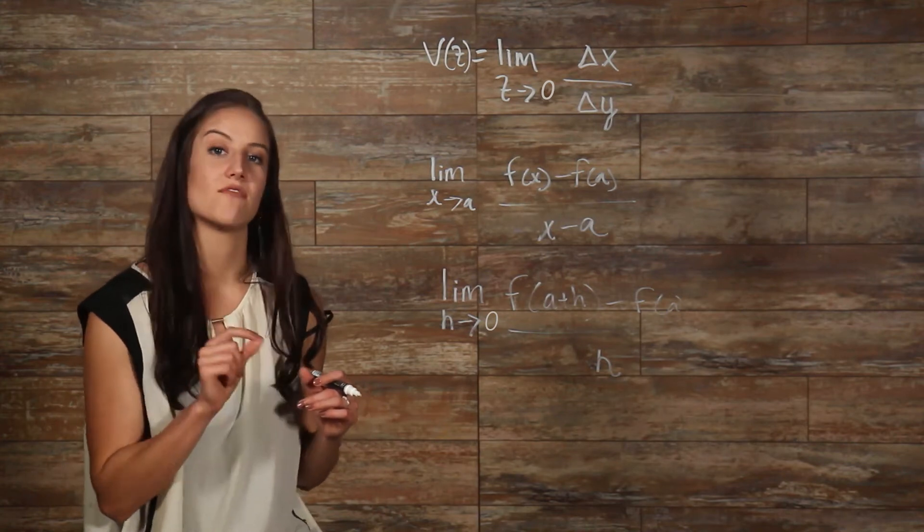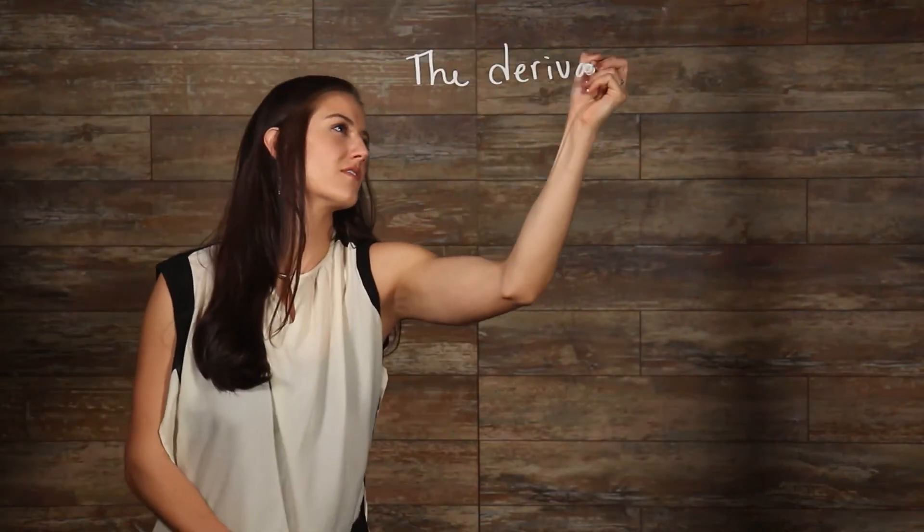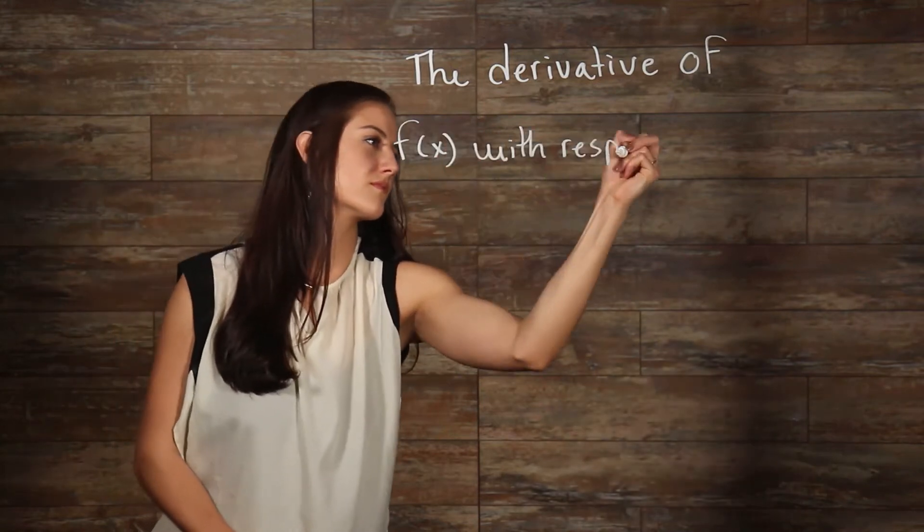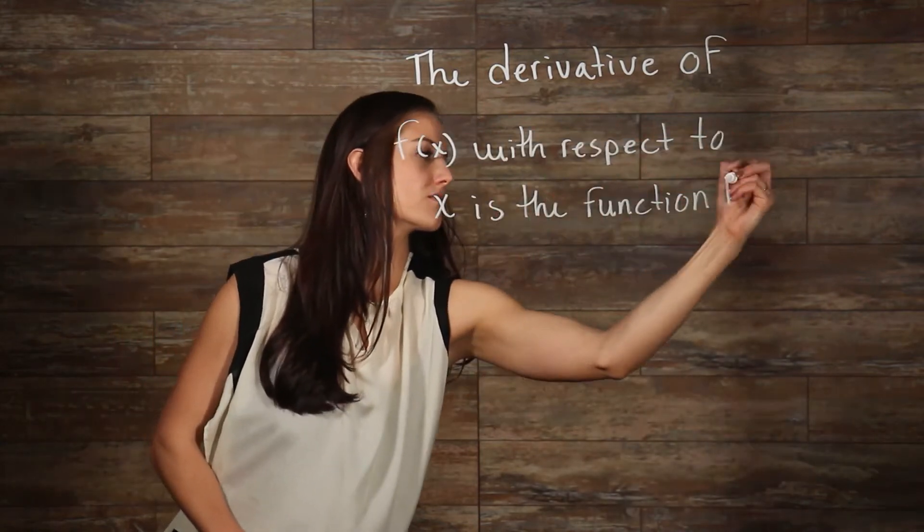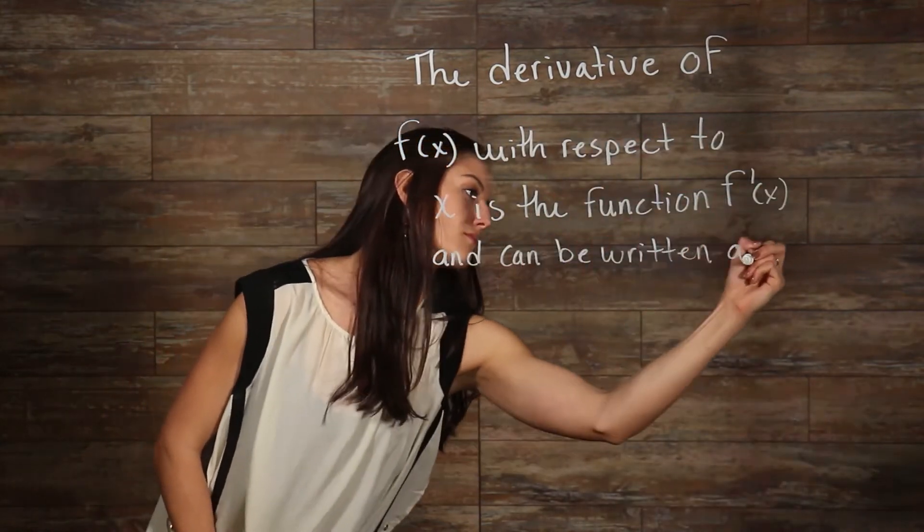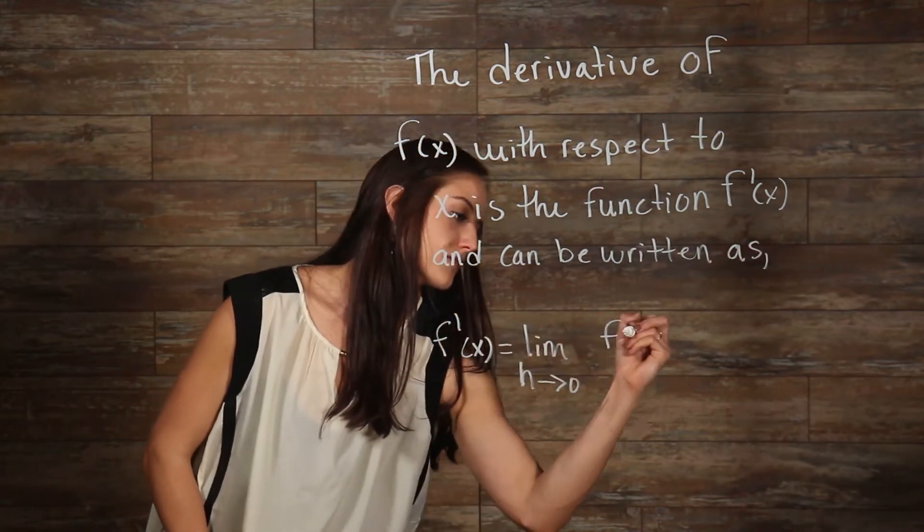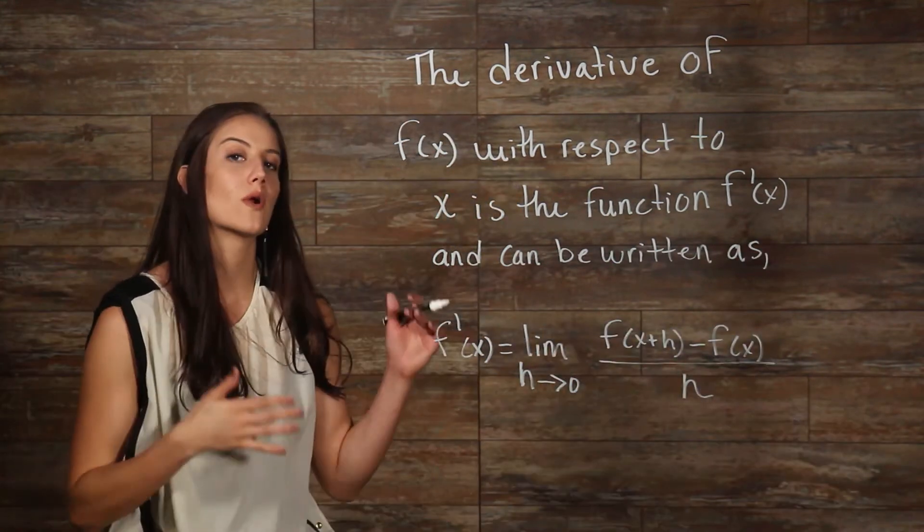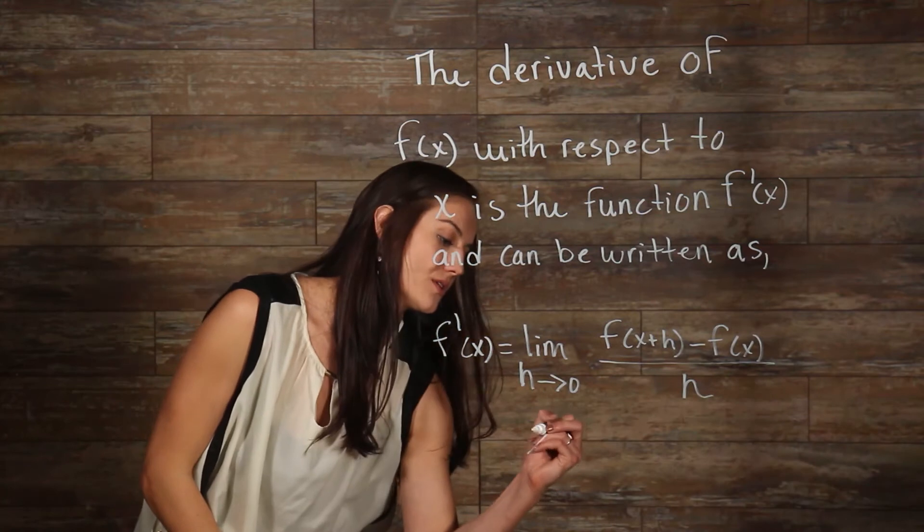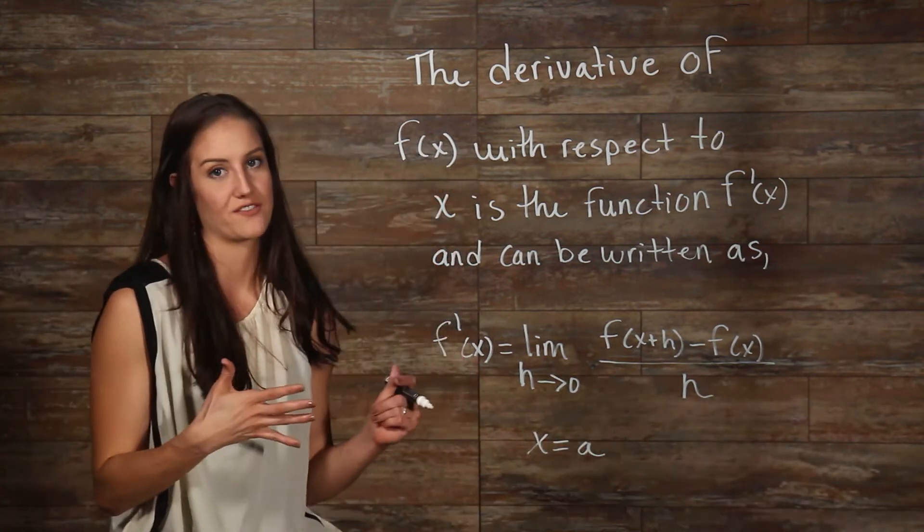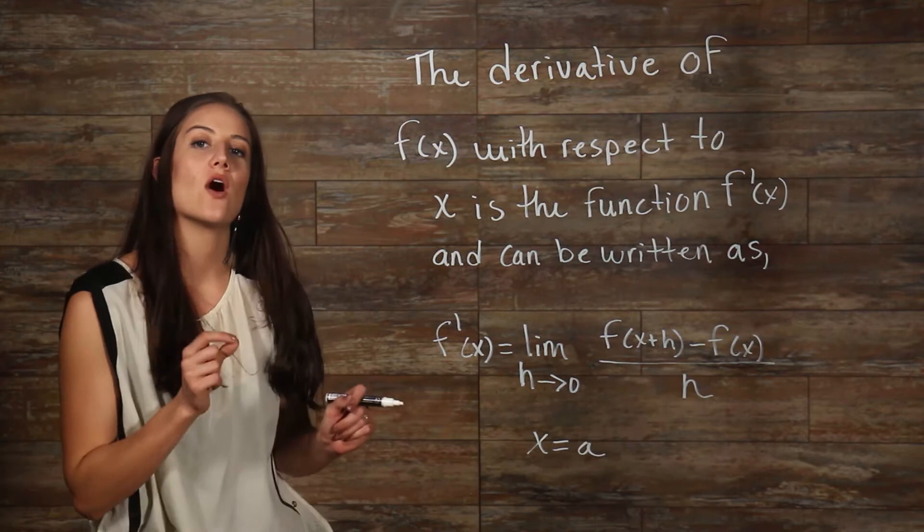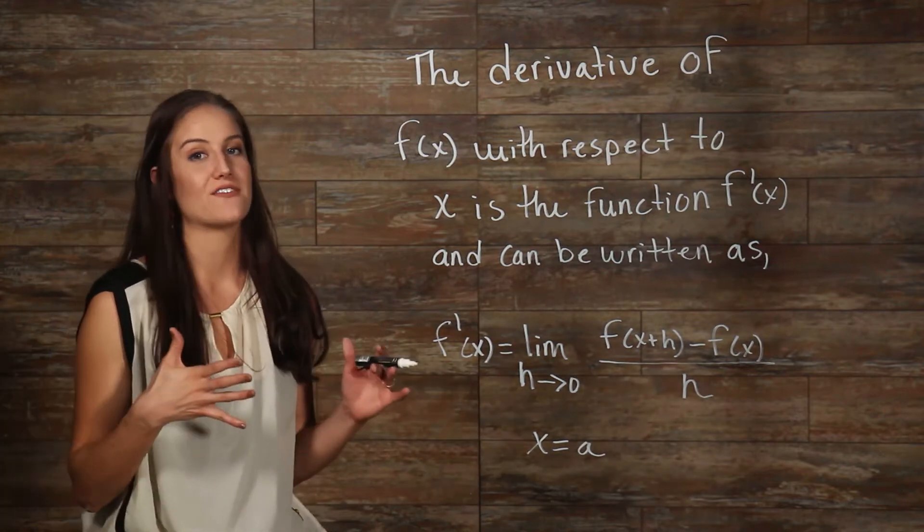Here is the official definition of the derivative, where x is equal to a, as in our instantaneous rate of change equation that we saw. Now, let's find some derivatives using the definition.